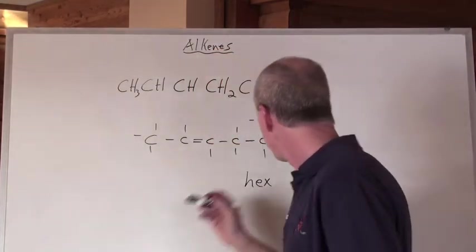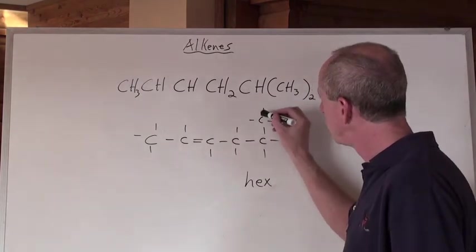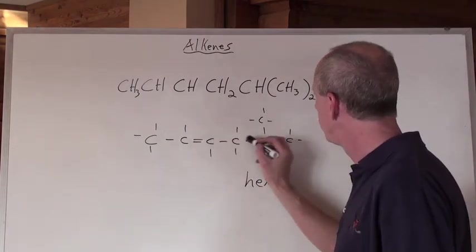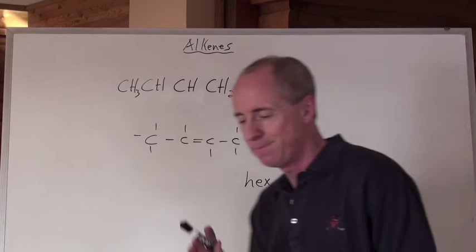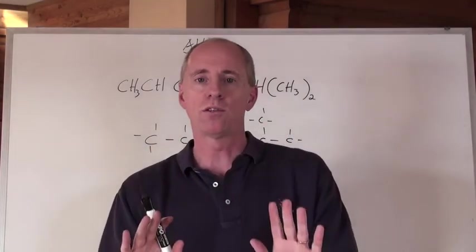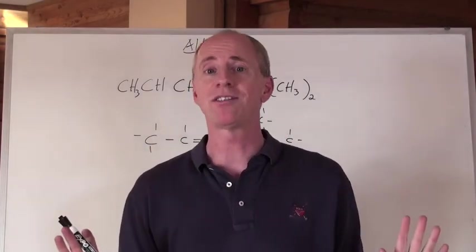But then that puts the methyl branch at the fifth carbon. What takes precedence? Should we be counting from this end to give the methyl the two, and then the 'ene' would be at the one, two, three, fourth carbon? Multiple bonds, whether double or triple, take precedence. They are the primaries here and they pretty much almost always will be.